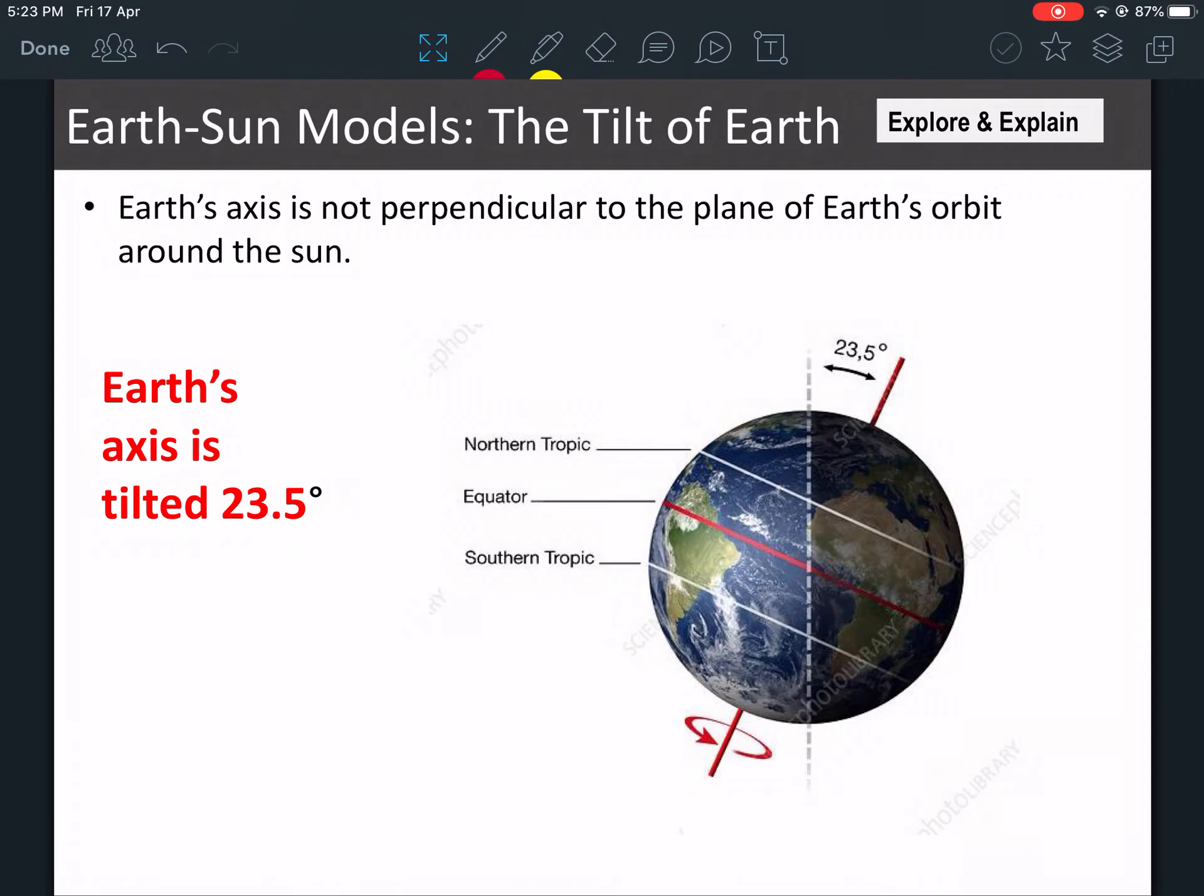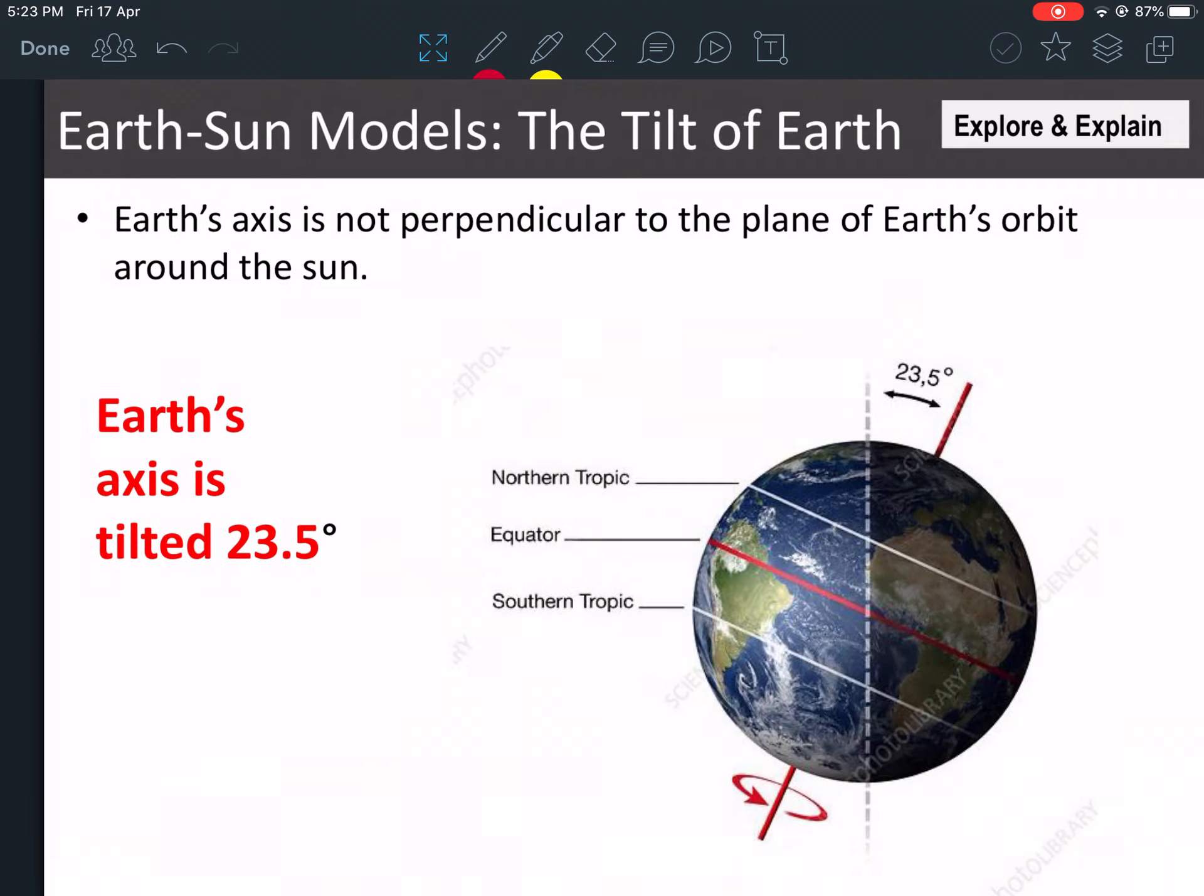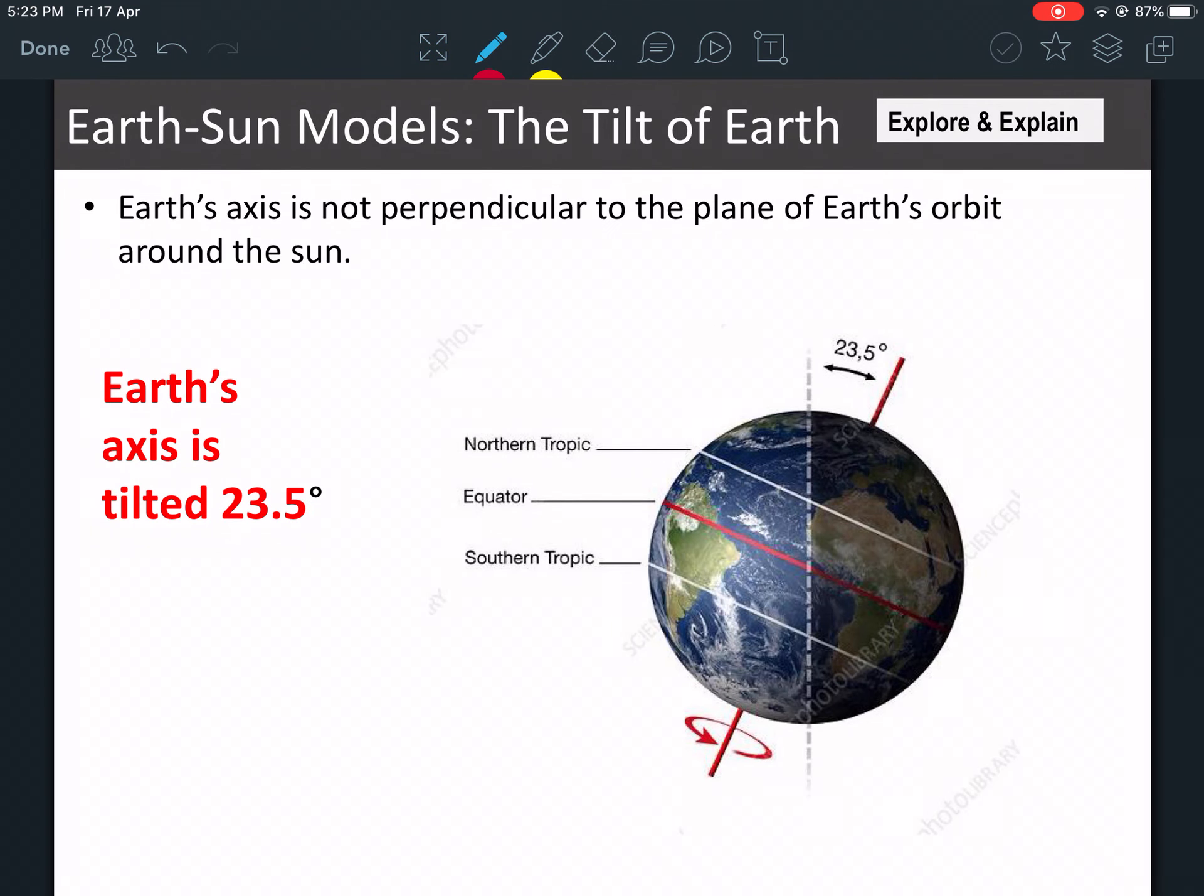Good morning everybody. So today we're going to be learning about the Earth's tilt and its revolution around the Sun and how that affects how much Sun each area gets.